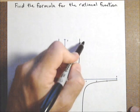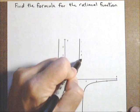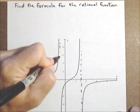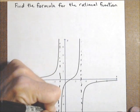First off I notice that it looks like I have a couple of vertical asymptotes at about 3 and negative 1.